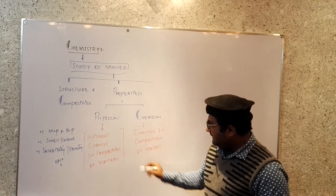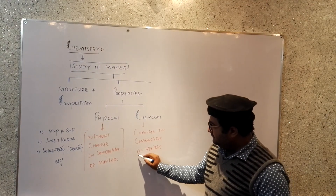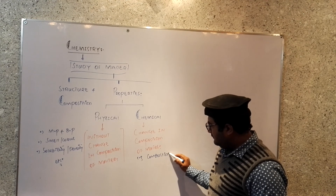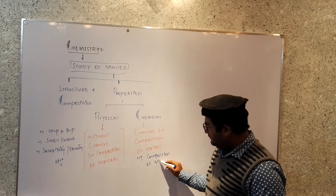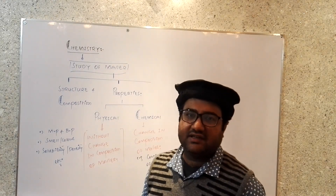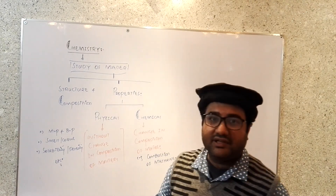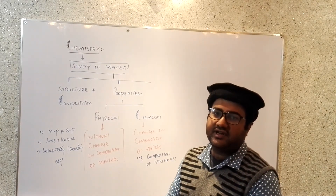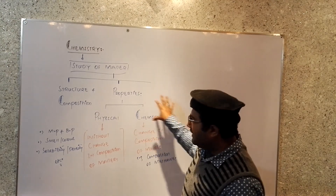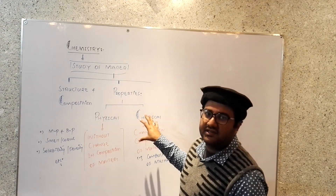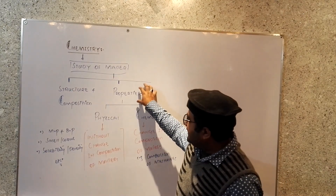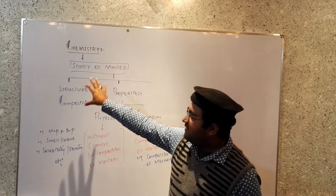For example, combustion of methane. When we combust the methane, new substances like CO2 and water are formed. Methane is CH4, but the new substances formed are totally different in terms of composition. So that change is called a chemical change. All the reactions that we study of any substance are included in the chemical properties, while physical properties are melting point, boiling point, and so on.